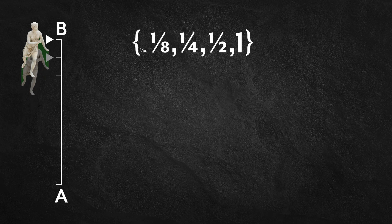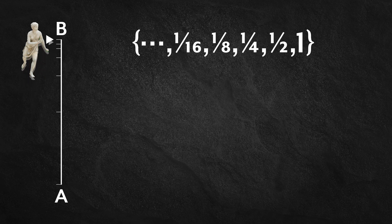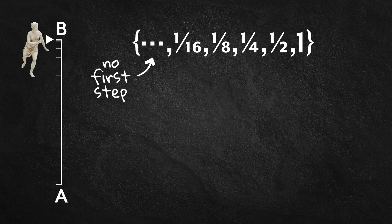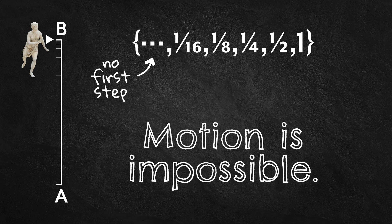Before one-eighth, one-sixteenth. And so on. It's an infinite process with no first step. And since there is no first step, the trip cannot even begin. Motion is impossible.